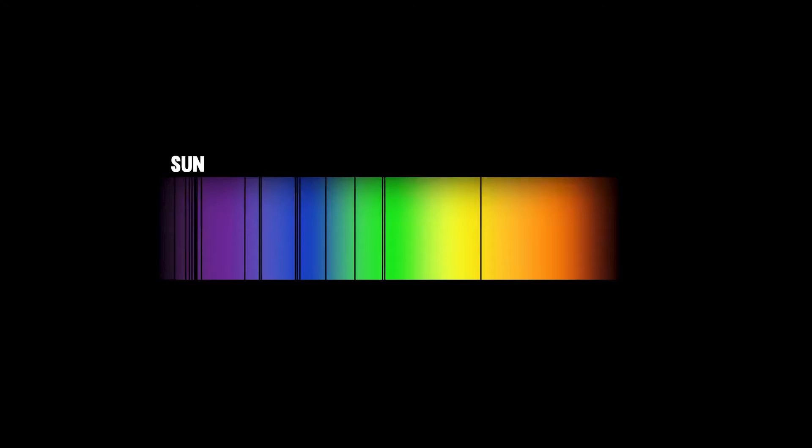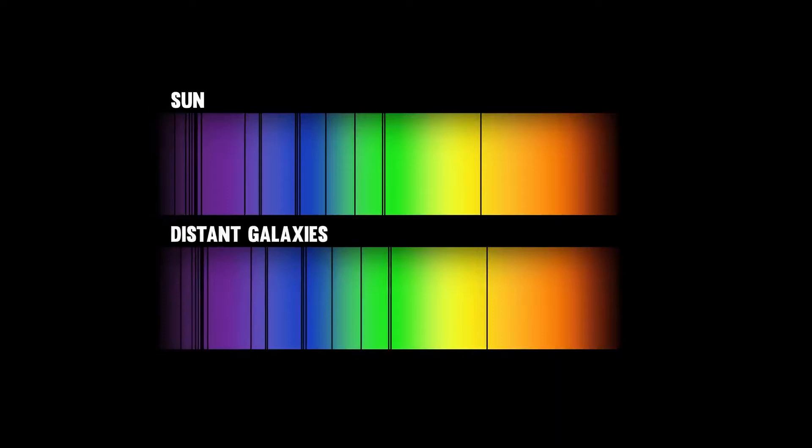We see these dark lines when we look at the sun's spectrum. We see the same lines in the spectra from distant galaxies, except they're shifted to longer wavelengths towards the red end of the spectrum. So we say their light is redshifted.